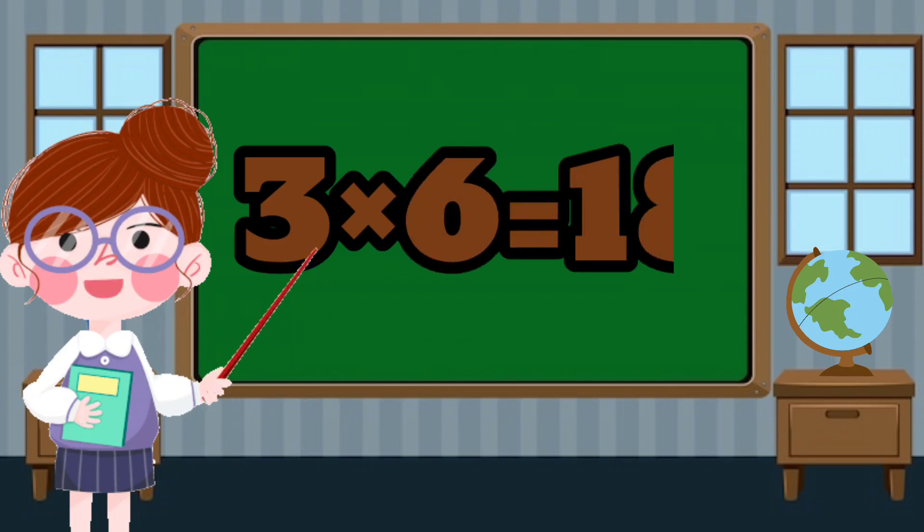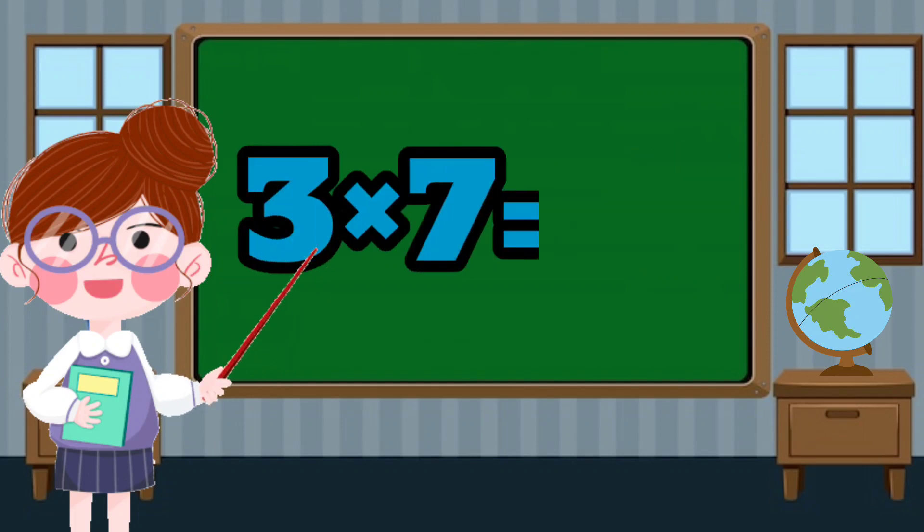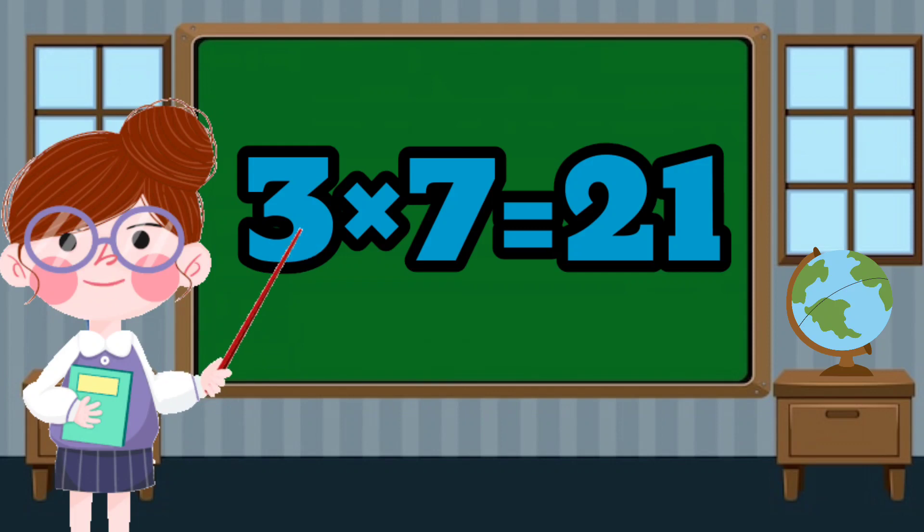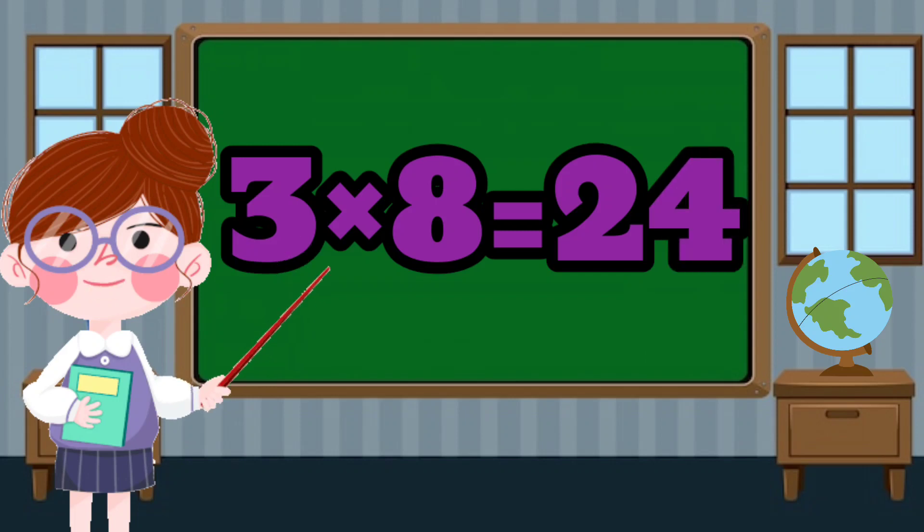3 times 6 equals 18. 3 times 7 equals 21. 3 times 8 equals 24.